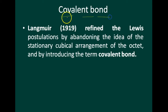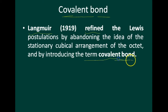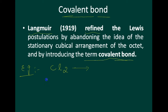The next topic is covalent bond. Scientist Lewis made postulations by abandoning the idea of the stationary cubic arrangement of the octet and by introducing the term covalent bond. Langmuir refined the Lewis postulations and also introduced the term covalent bond, explaining it by considering the example of the formation of chlorine.